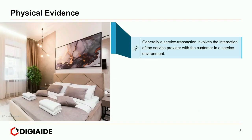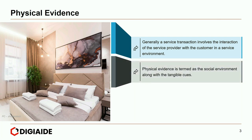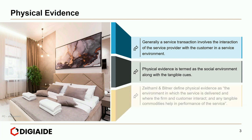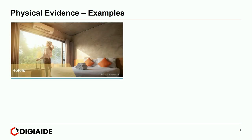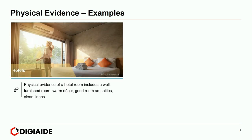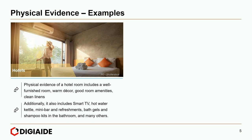Generally, a service transaction involves the interaction of the service provider with the customer in a service environment. Physical evidence is termed as the social environment along with the tangible cues where the service provider and the customer interact. Zeithaml and Bitner define physical evidence as the environment in which the service is delivered and where the firm and customer interact, and any tangible commodities that help in the performance of the service. Moving on to some examples of physical evidence. In the case of hotels, physical evidence of a hotel room includes a well-furnished room, warm decor, good room amenities, clean linens, and additionally smart TV, hot water kettle, mini bar and refreshments, bath gels and shampoo kits in the bathroom.